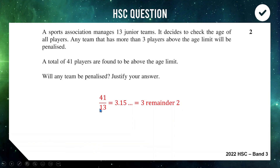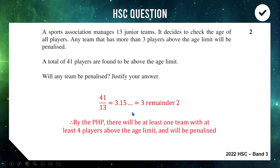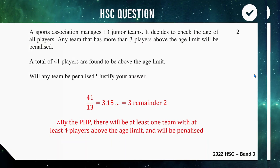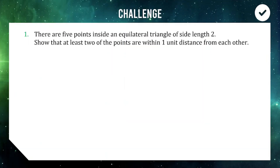Doing 41 divided by 13 gives 3.15, or 3 remainder 2. Since this is larger than 3, by the pigeonhole principle there must be at least one team with more than three over-age players — at least four in at least one team. So yes, at least one team will be penalized. That explanation earns your two marks.